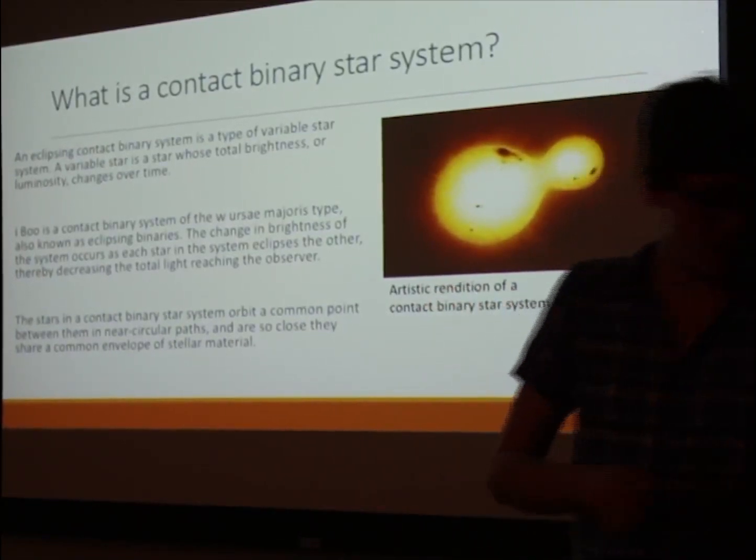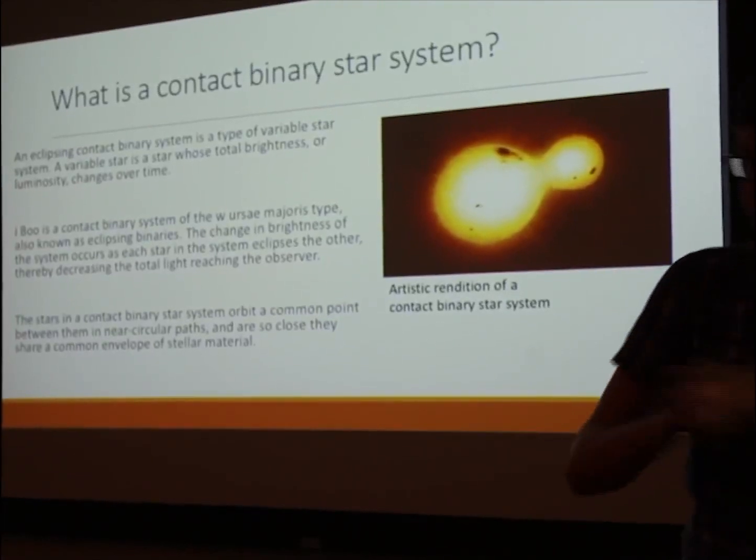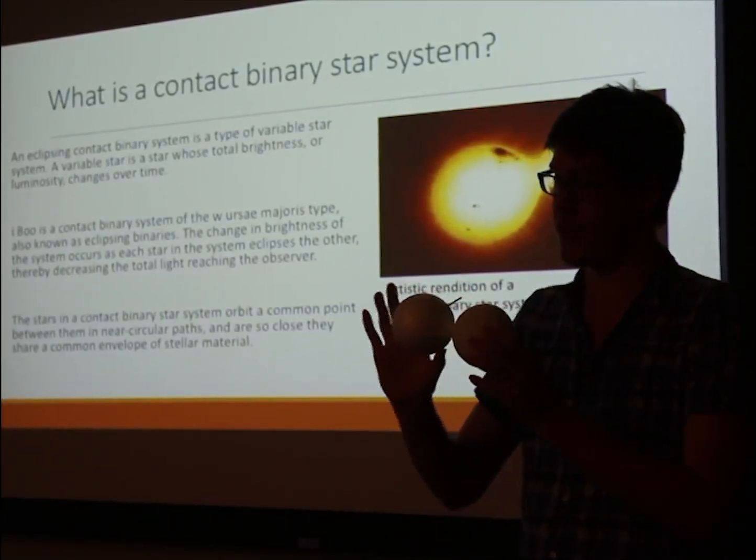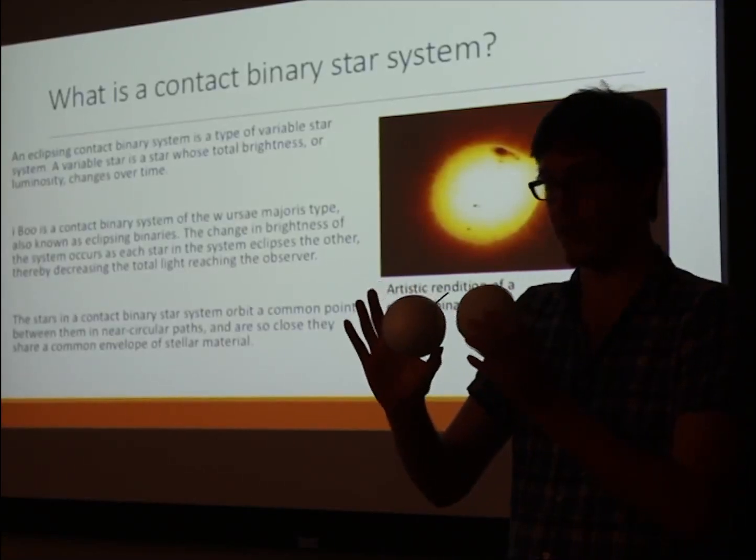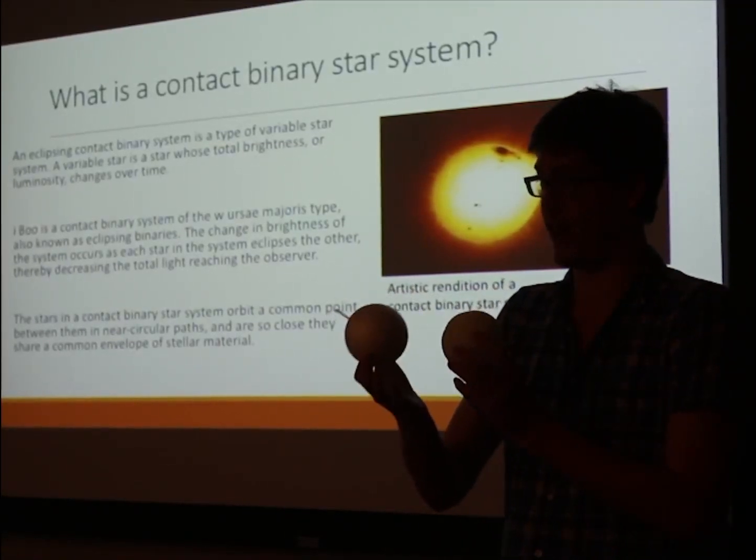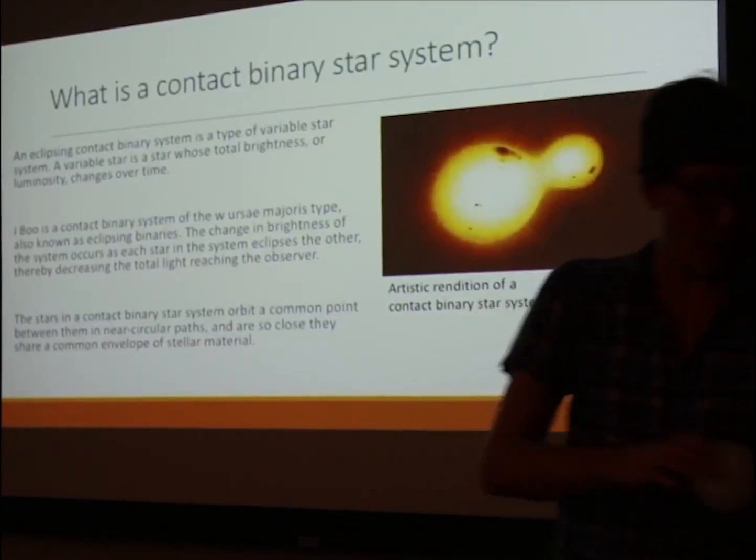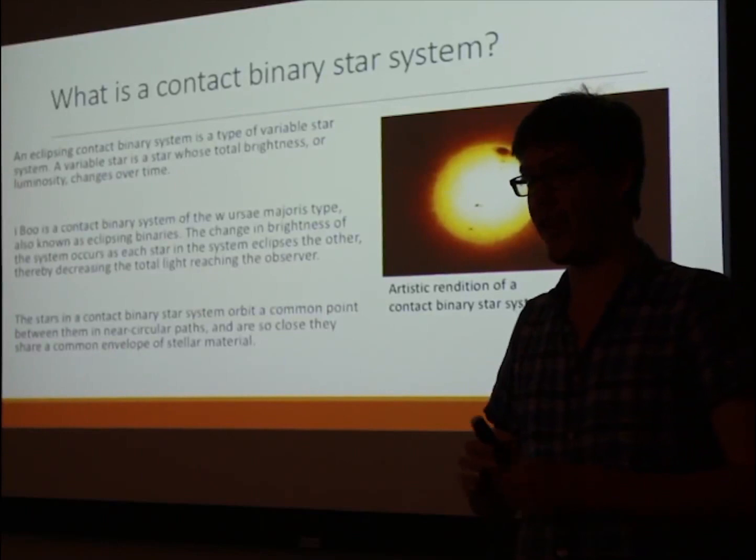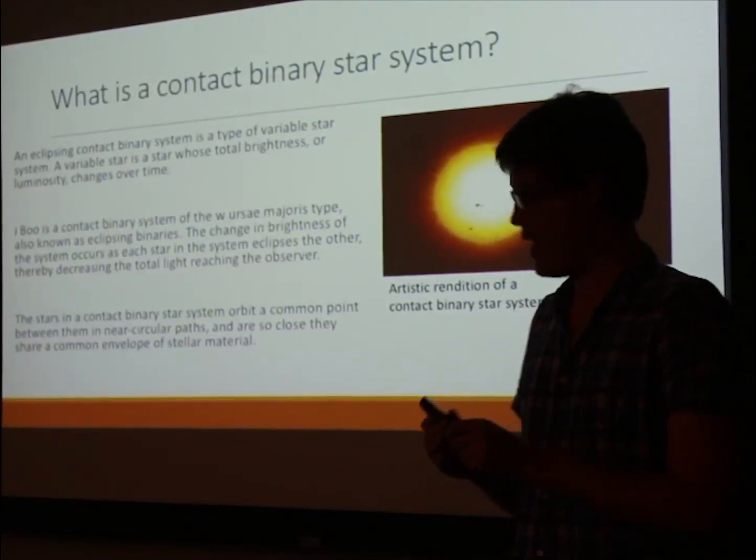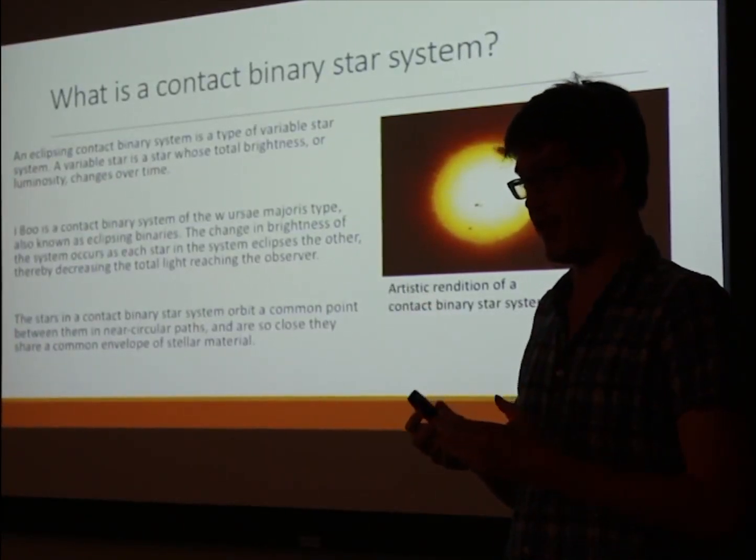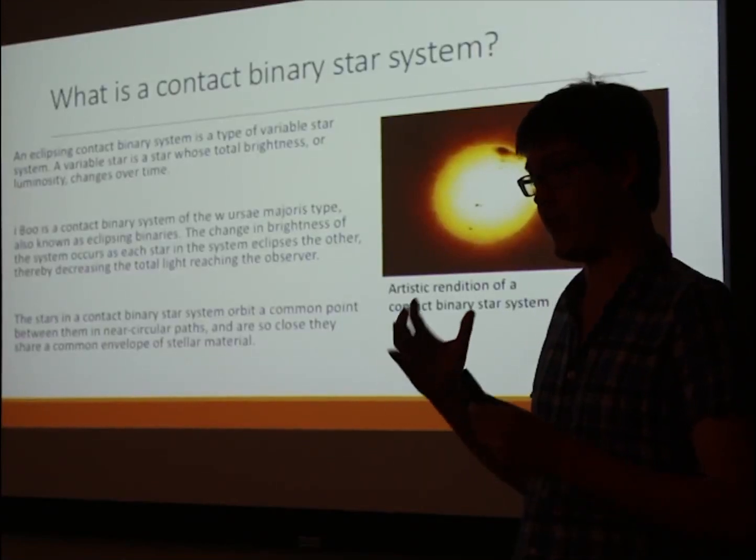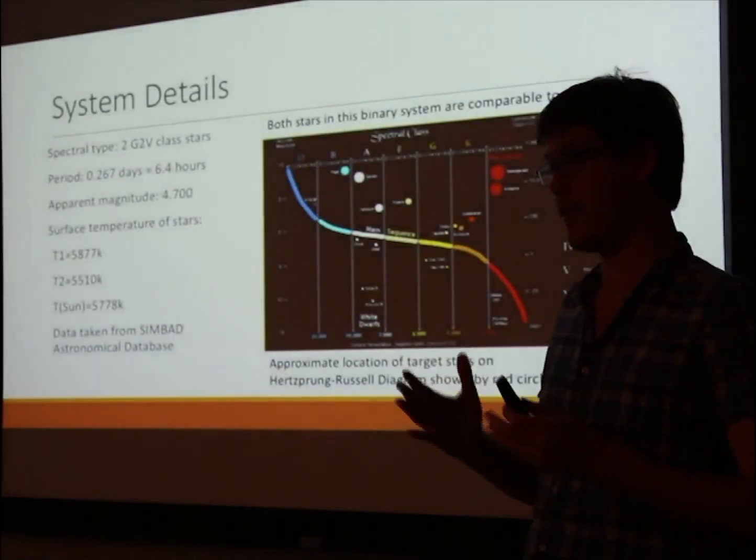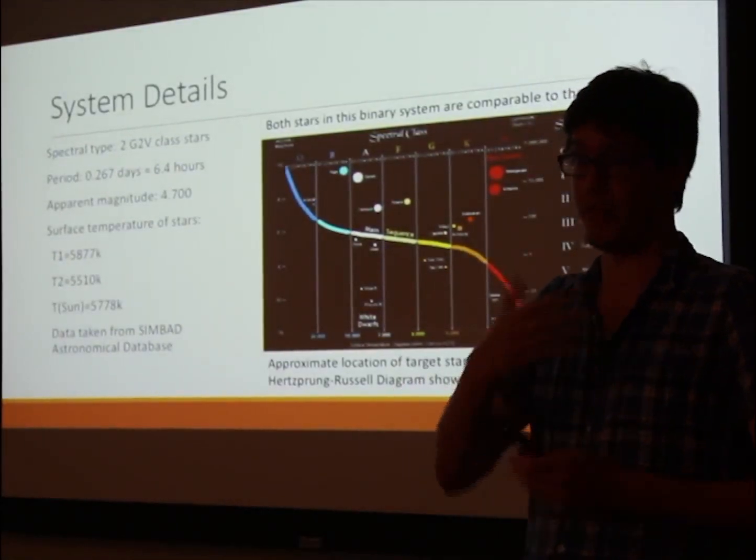In a contact eclipsing binary system, that is due to two stars orbiting each other. The change in brightness will occur when one of these stars moves in front of the other, or eclipses the other one, blocking out light from this star reaching us on Earth. A special thing about contact binary systems is they are actually so close together that they are sharing stellar material.